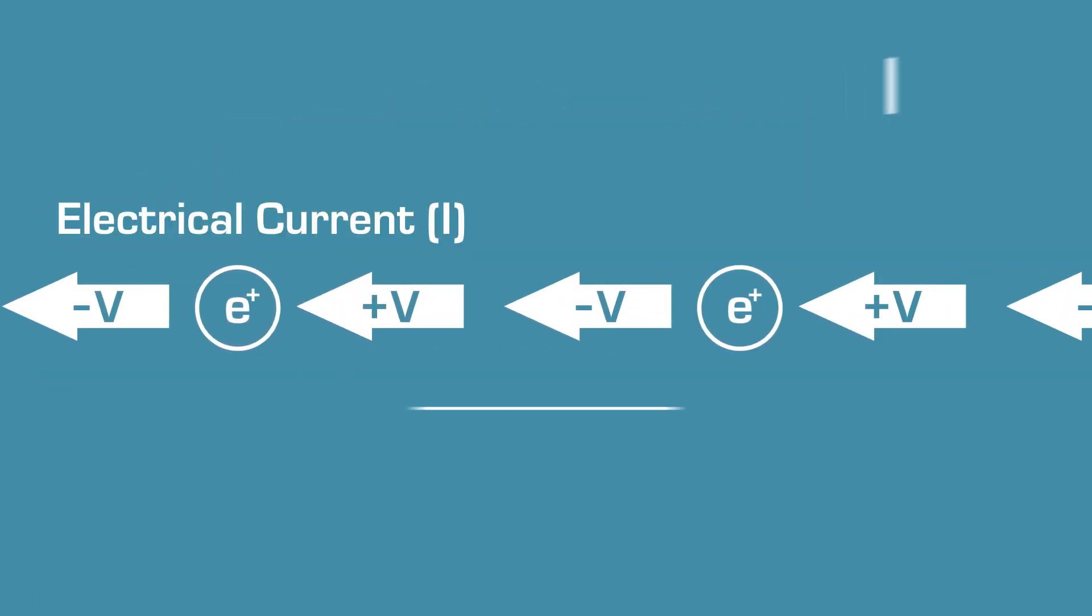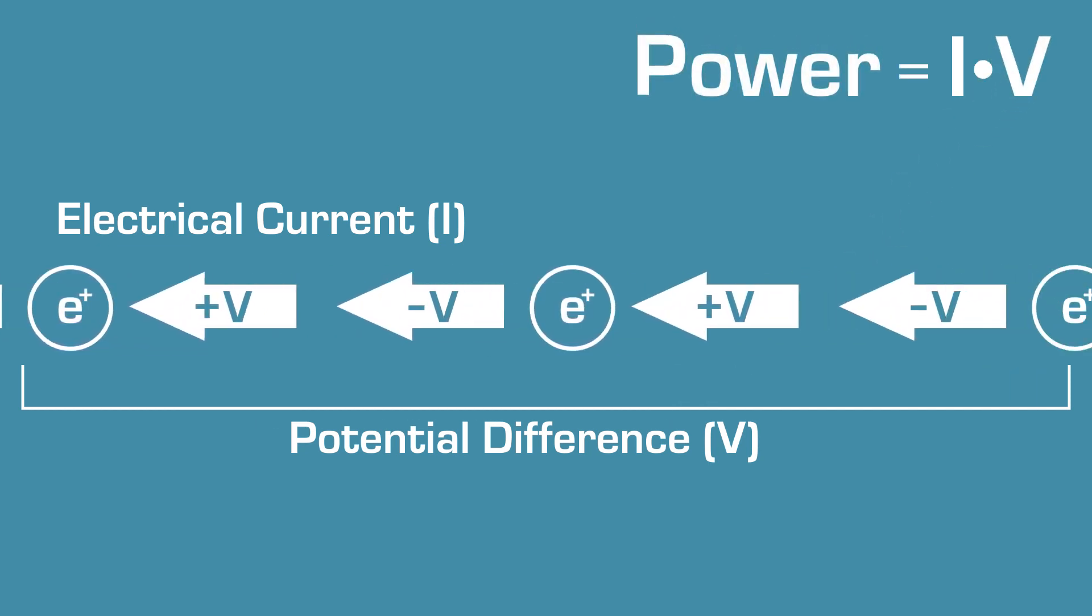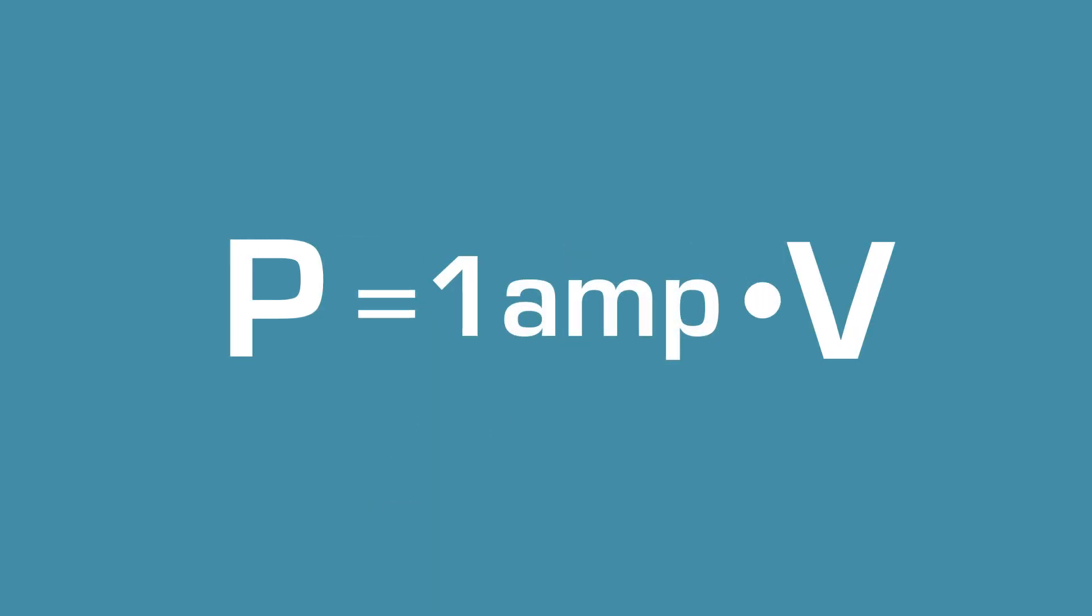The amount of current flow multiplied by the potential difference between the two points is equal to the amount of power being moved or used and is measured in watts. One amp flowing through a potential difference of one volt delivers one watt of power.